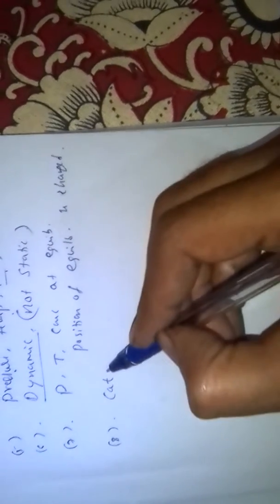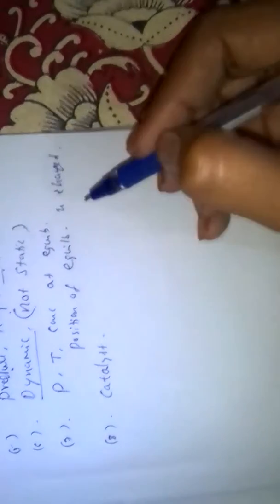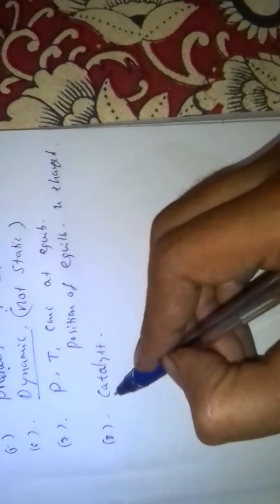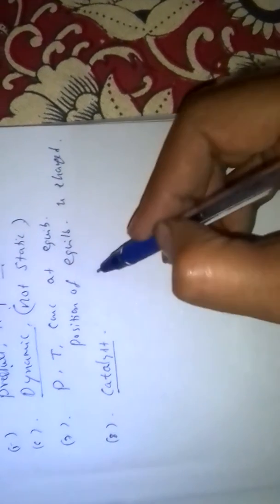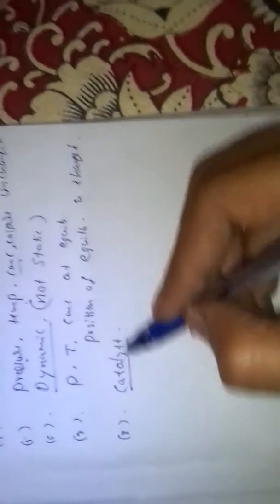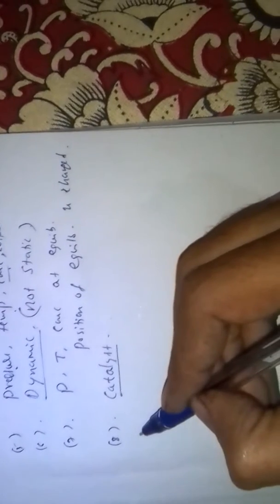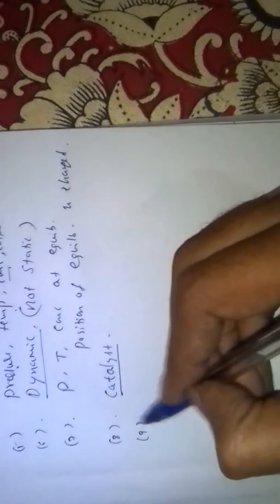A catalyst does not affect the position of equilibrium. A catalyst helps to reach the equilibrium quickly, but does not affect the position of the equilibrium.